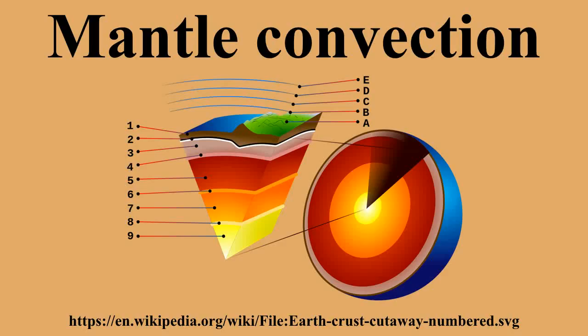Mantle convection is the slow creeping motion of Earth's solid silicate mantle caused by convection currents carrying heat from the interior of the Earth to the surface. The Earth's surface lithosphere, which rides atop the asthenosphere, is divided into a number of plates that are continuously being created and consumed at their opposite plate boundaries. Accretion occurs as mantle is added to the growing edges of a plate, associated with seafloor spreading, and this hot added material cools down by conduction and convection of heat.